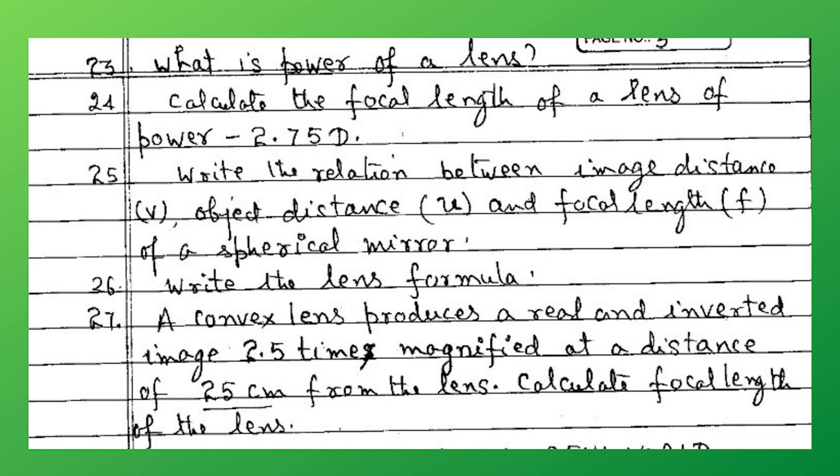Calculate the focal length of a lens of power minus 2.75 diopter. Write the relation between image distance v, object distance u, and focal length f of the spherical mirror. Write the lens formula. There is a sum: a convex lens produces a real and inverted image 2.5 times magnified at a distance of 25 cm from the lens — calculate the focal length of the lens.